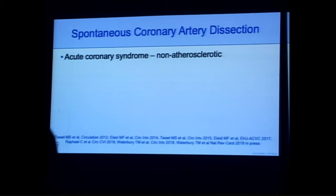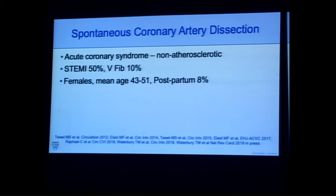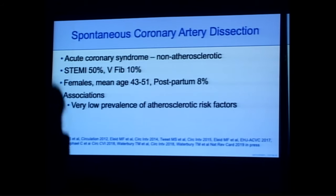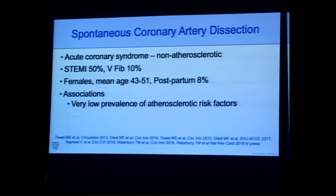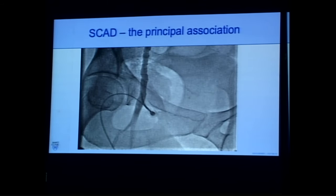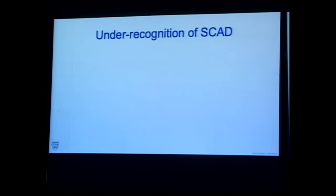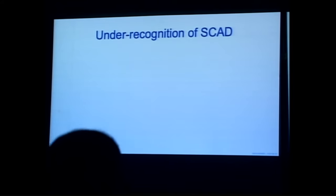A few points on spontaneous dissection, because we're all seeing a lot more of it. It's an acute coronary syndrome that can present in a high-risk manner, is non-atherosclerotic, and typically affects middle-aged females — average age upper 40s, postpartum in about 8%. Key associations include a very low prevalence of atherosclerotic risk factors. The principal association is fibromuscular dysplasia, present in 50-80% of patients when screened with CT angiogram. We've been under-recognizing spontaneous dissection, and imaging has helped us pick up more cases over the last five or six years.